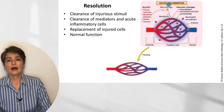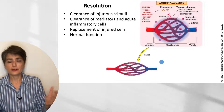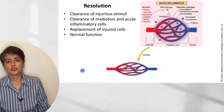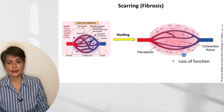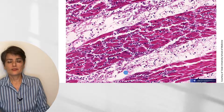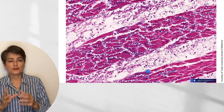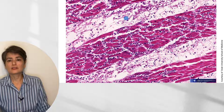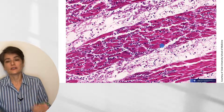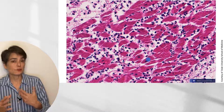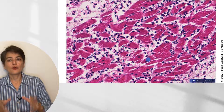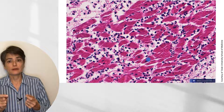Looking at the figure: resolution involves clearance of injurious stimuli, clearance of mediators and acute inflammatory cells, replacement of injured cells, and return to normal function. With significant damage, we get scarring or fibrosis with abundant collagen and connective tissue laid down by fibroblasts. In a myocardial infarction image, the space is edema, there are neutrophils, and the pink hypereosinophilic cells are necrotic cardiac myocytes — denatured protein binds well to eosin. When you see a sea of neutrophils, think acute inflammation.